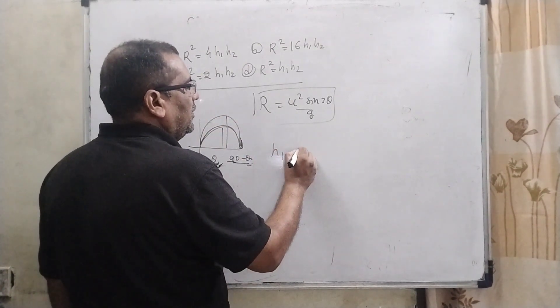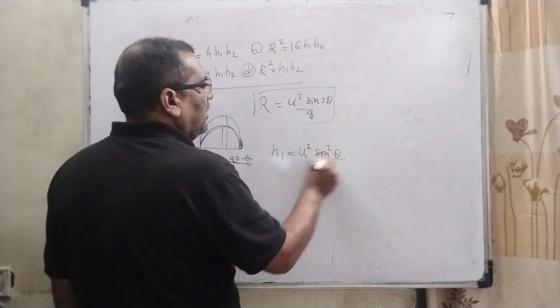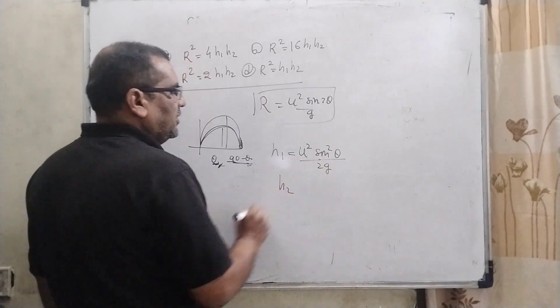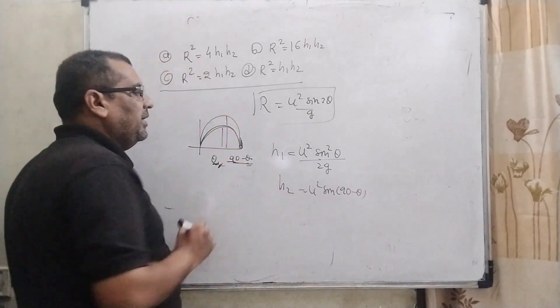Then let us consider h1 equal to u square sine square theta by 2g. And second height h2 equal to u square sine square 90 minus theta by 2g. 90 minus theta because they are complementary angles.